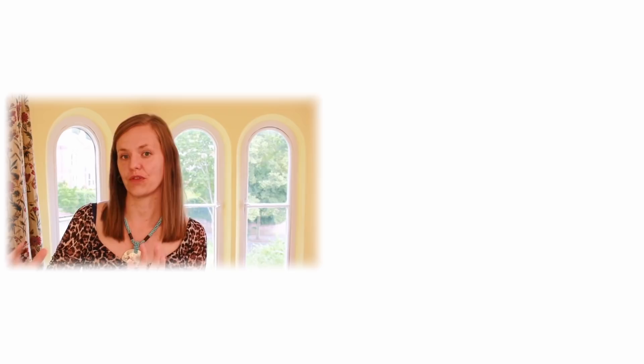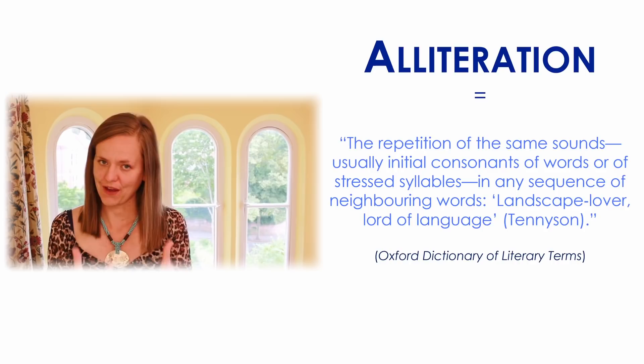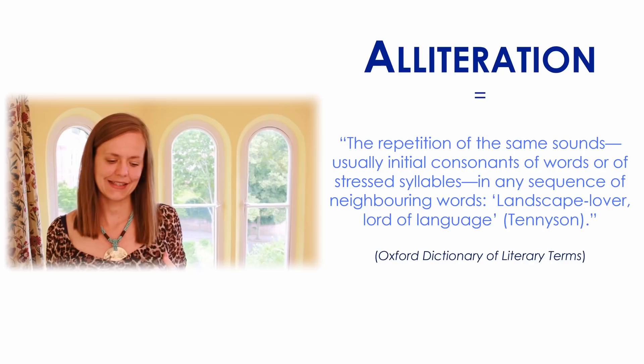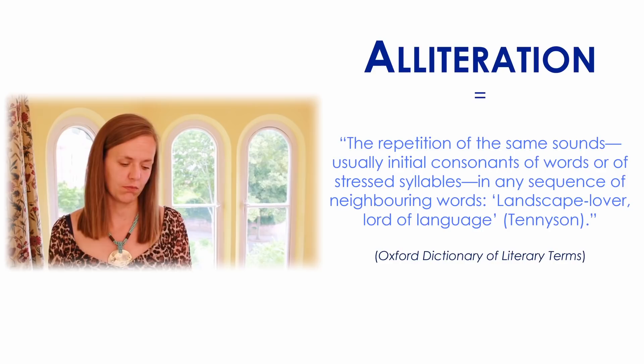If you're interested in Austen, do look at these early pieces because the threads run all the way through her later work. The alliterative dedicatory letter establishes Austen's knowing tone for the rest of the collection. Alliteration — to give the definition from the Oxford Dictionary of Literary Terms — is the repetition of the same sounds, usually initial consonants of words or of stressed syllables in any sequence of neighbouring words. For example, "landscape lover, lord of language" from Alfred Lord Tennyson's poem To Virgil.